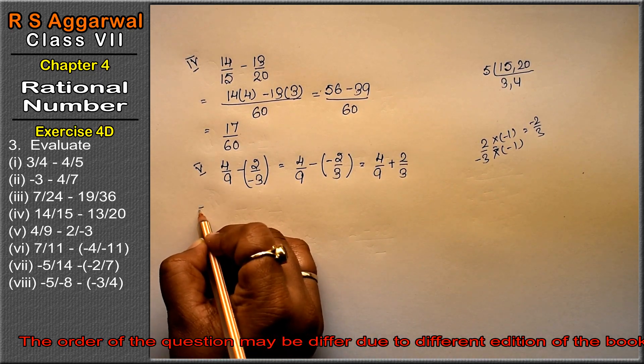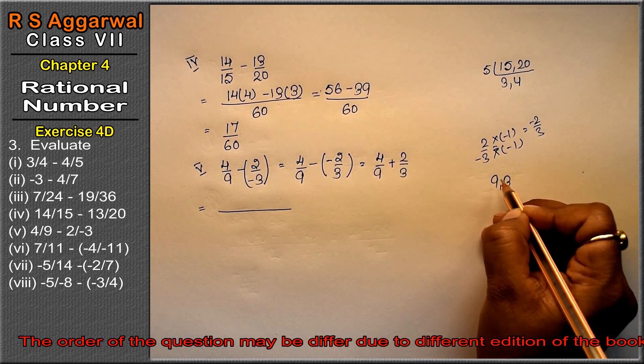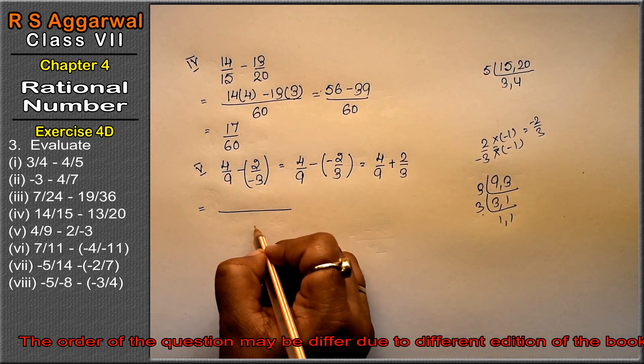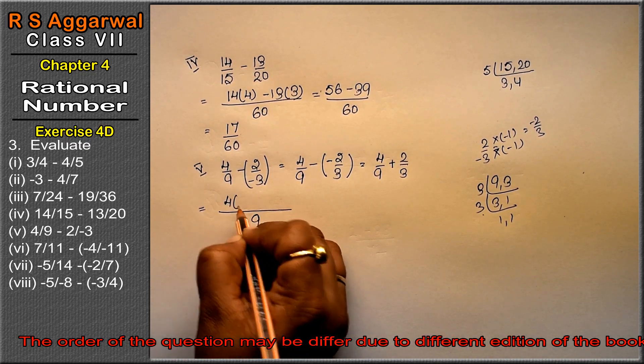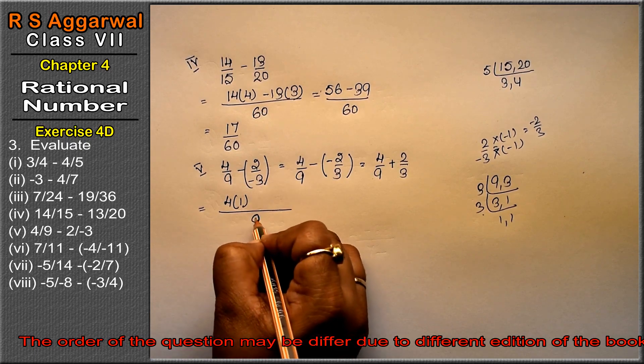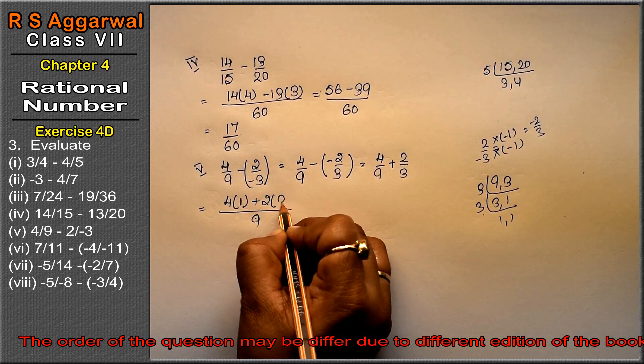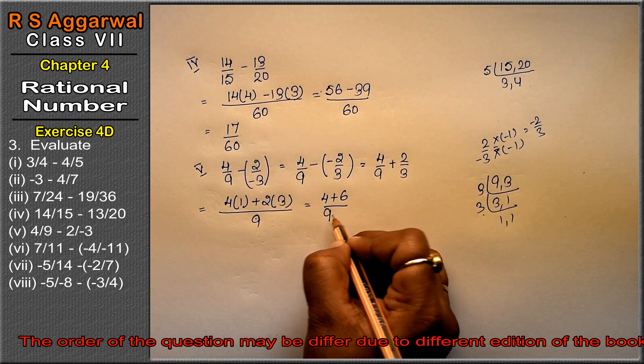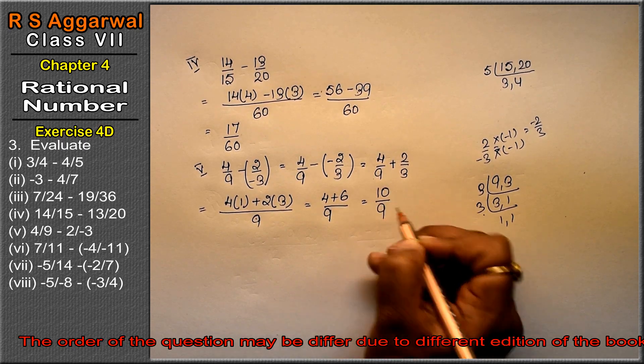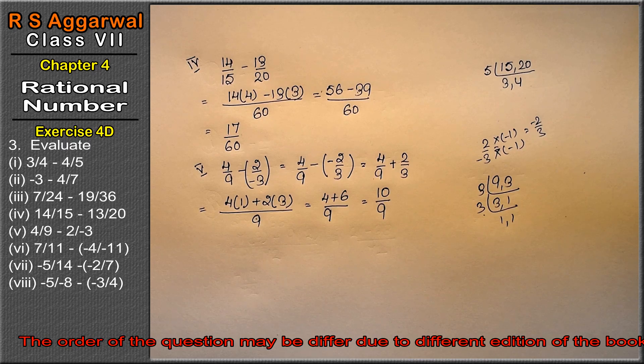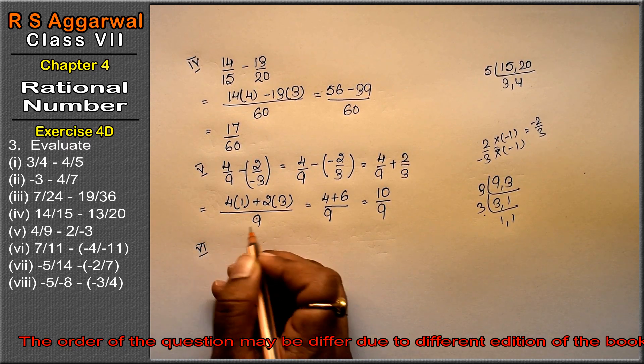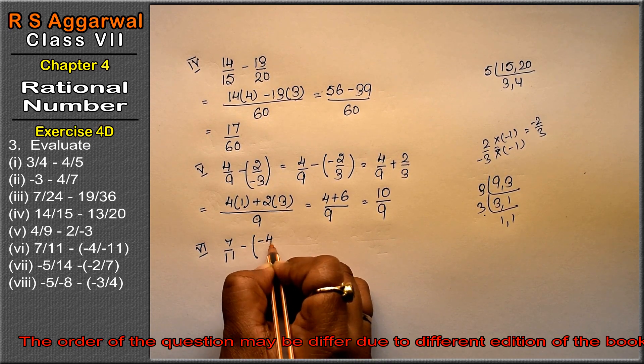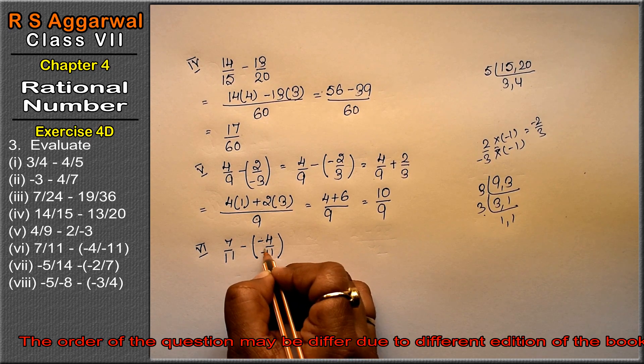Now LCM of 9 and 3: 3 times 3 is 9, so LCM is 9. We get 4 upon 9 and 2 times 3 is 6 upon 9. So 4 plus 6 upon 9. Two minuses make a plus, so now we add: 10 upon 9 is the answer.